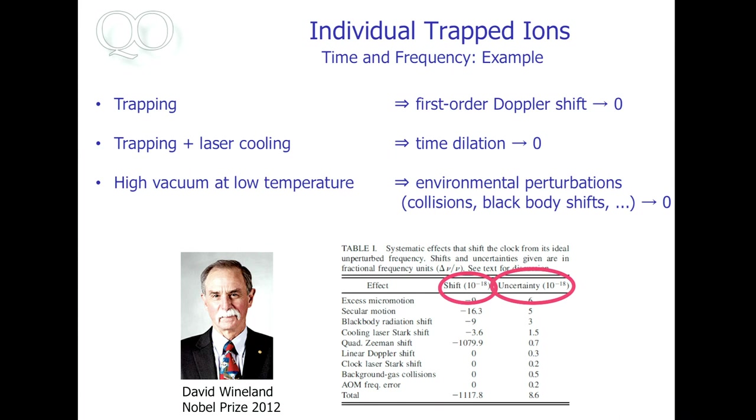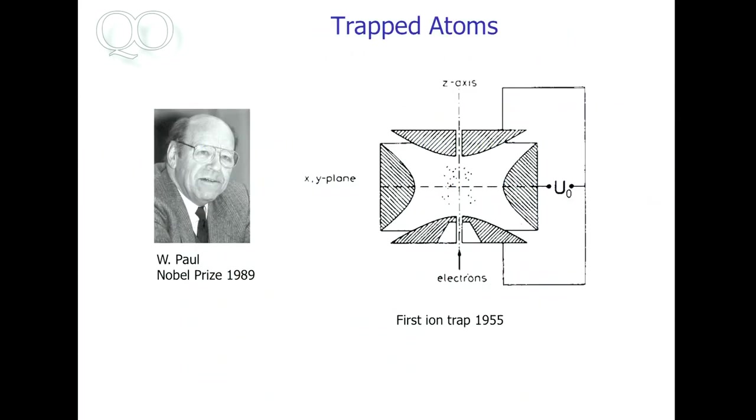If you laser cool them, time dilation basically goes to zero, very close to zero, very small. And you trap them at ultra-high vacuum, typically, and you laser cool them. And so you don't have any perturbations. And so this is a table from a paper from the Wineland group where they have an error budget. And I don't want to go through this error budget. I just want to draw your attention to the uncertainties that we have here. So this is a rather unbelievably uncertainty in the 10 to the minus 18 range. So that's how well these individual atoms are under control.